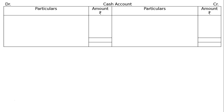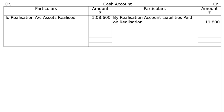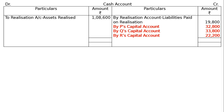Preparing the cash account: debit side — to realization account for assets realized Rs. 1,08,600. Credit side — by realization account for liabilities paid on realization Rs. 19,800; by P's capital account Rs. 32,800; by Q's capital account Rs. 33,800; by R's capital account Rs. 22,200. Total is Rs. 1,08,600 on both debit and credit sides. This is the final answer.